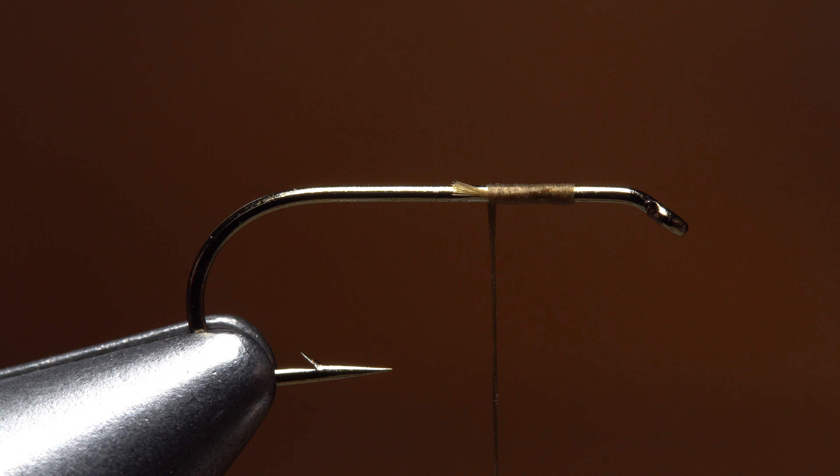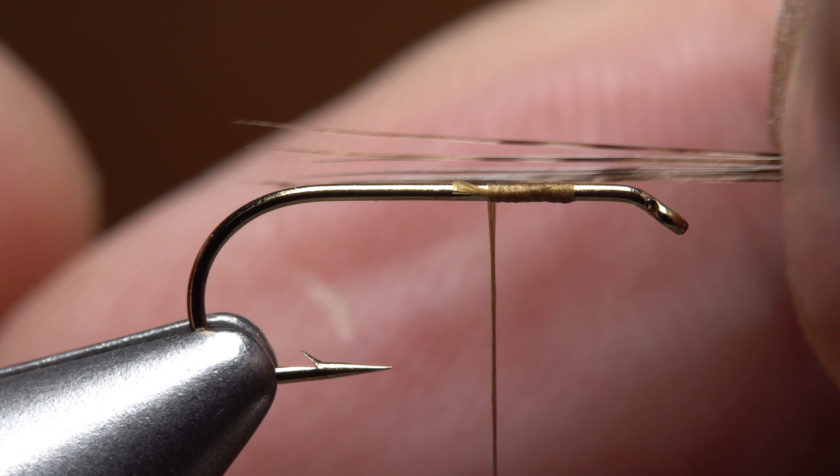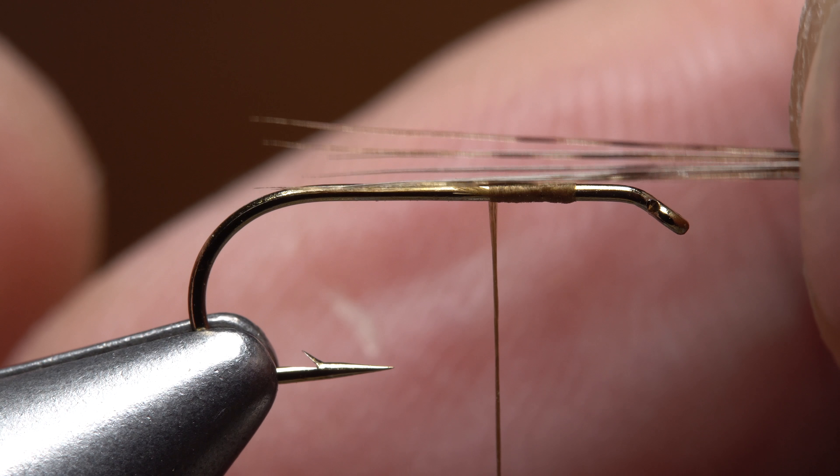When measuring to form a tail that's to be a hook shank in length, begin by aligning the tips precisely at the start of the hook bend.